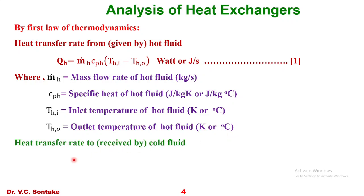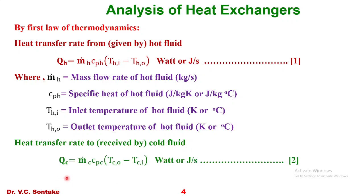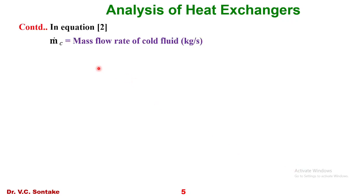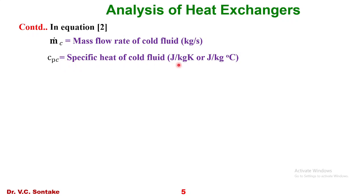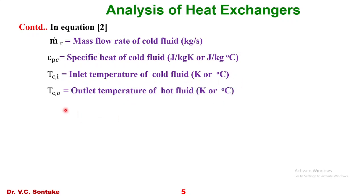Similarly, the heat transfer rate received by the cold fluid is: Q_C = Ṁ_C · C_PC · (T_CO − T_CI) Watts or Joules per second — let us call this equation number 2. Here, Ṁ_C is the mass flow rate of cold fluid in kg/s, C_PC is the specific heat of cold fluid in J/kg·K or J/kg·°C, T_CI is the inlet temperature of cold fluid, and T_CO is the outlet temperature of cold fluid, both in Kelvin or degree Celsius.